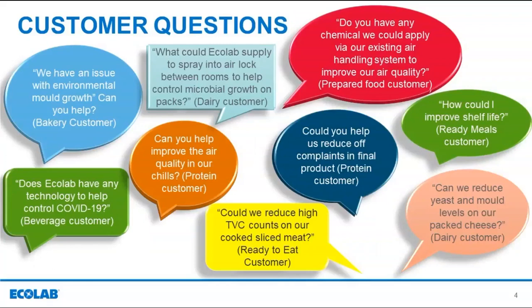Think about if these questions might be relevant to your factory or facility: We have an issue with environmental mold growth — can you help? Can you improve the air quality in our chills? What could Ecolab supply to spray into an air lock between rooms to help control microbial growth on packs? Could you help us reduce off-flavor complaints in final product? Do you have any chemical we could apply via our existing air handling system? How can I improve my shelf life? Can we reduce yeast and mold levels on our packed cheese? Could we reduce high TVC counts on our cooked sliced meat? Do people have any technology to help control COVID-19?